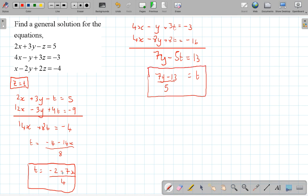So I'm going to start off with z equals 7y take away 13 divided by 5, and that is also equal to minus 2 minus 7x over 4.